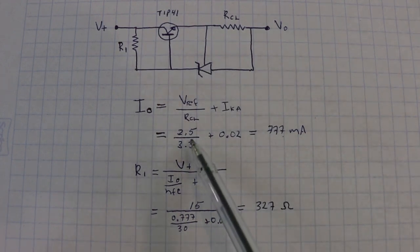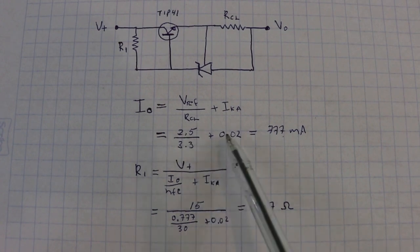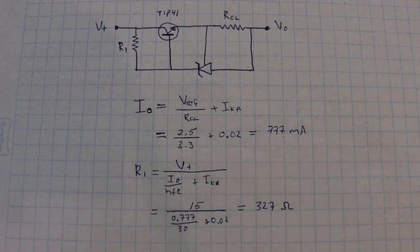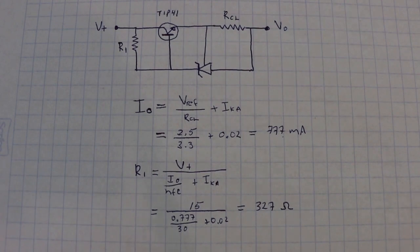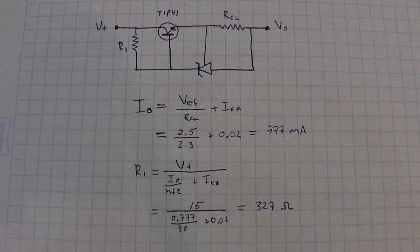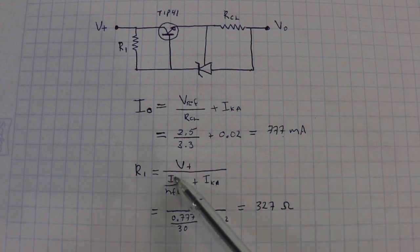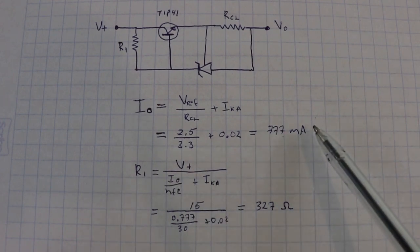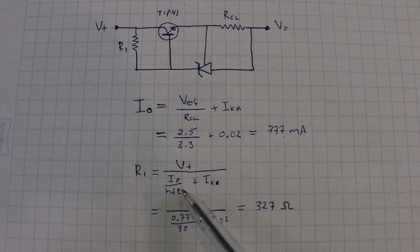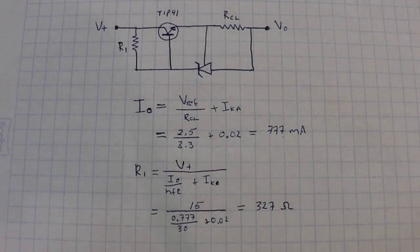Using a resistor of 3.3 ohms, we get a current of 777 milliamps. And, this resistor here is calculated with this formula: the input voltage divided by the current that we calculated, divided by the transistor's gain.